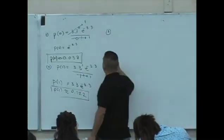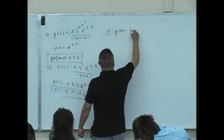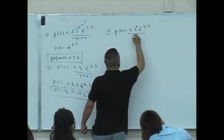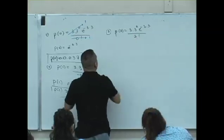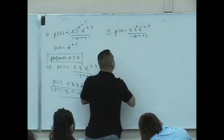Question 3. P of 2 is 3.3 squared, e to the minus 3.3 over 2 factorial. Well, 2 factorial is the value 2. So what happens when you approximate this answer to the nearest thousandths? What do you get now?